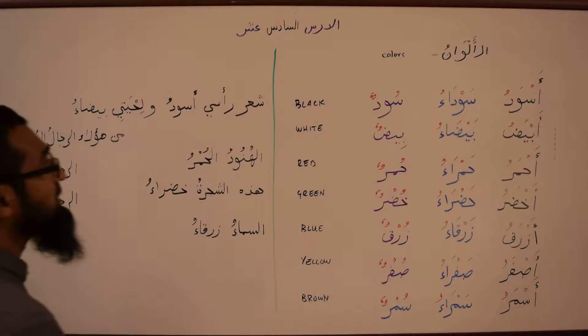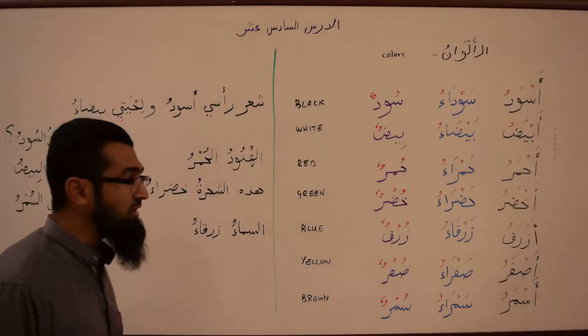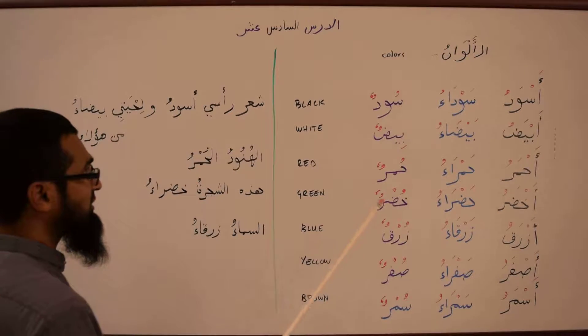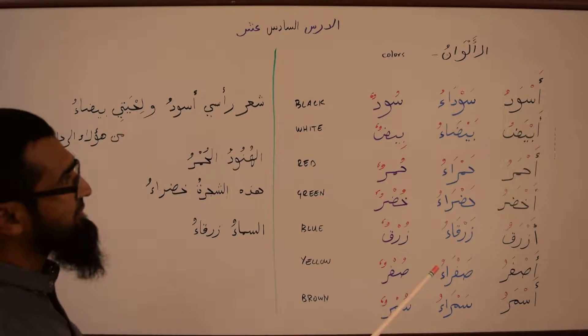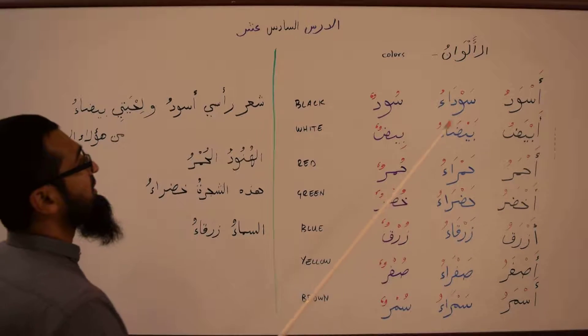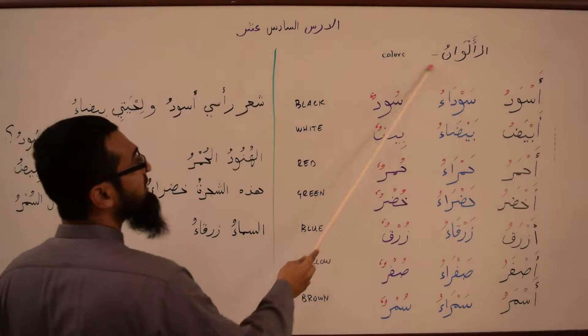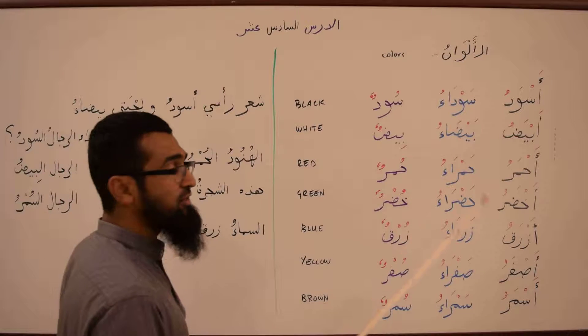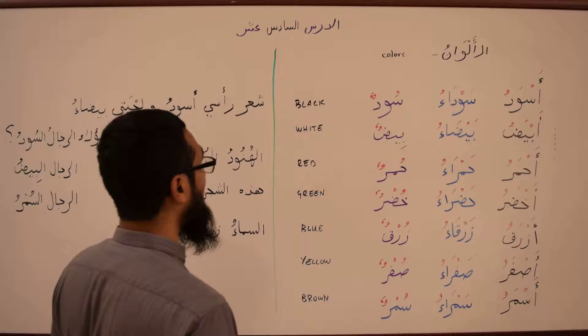Bismillah ar-Rahman ar-Rahim. Next concept, which is concept number five: Al Alwan, the different colors. So we've learned in the past these colors.